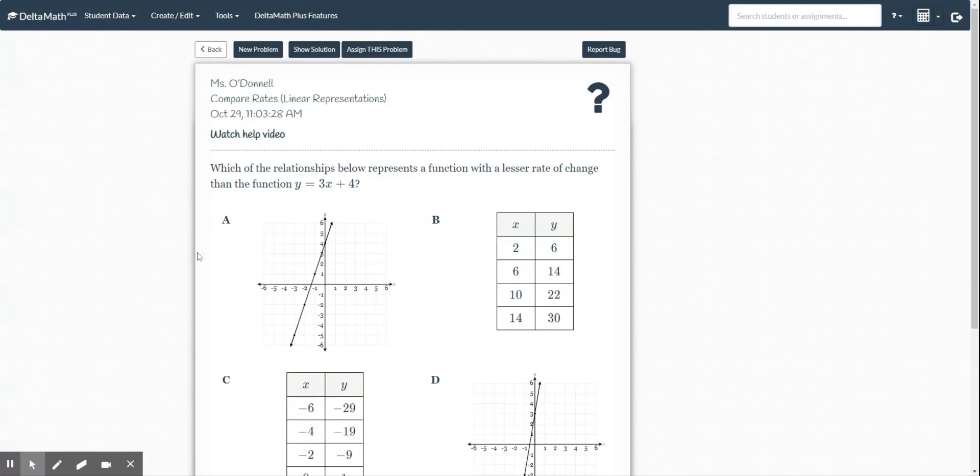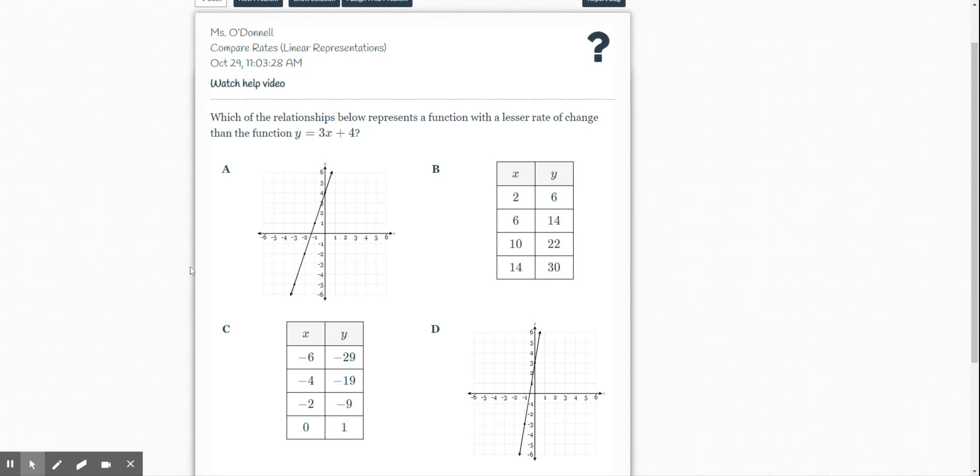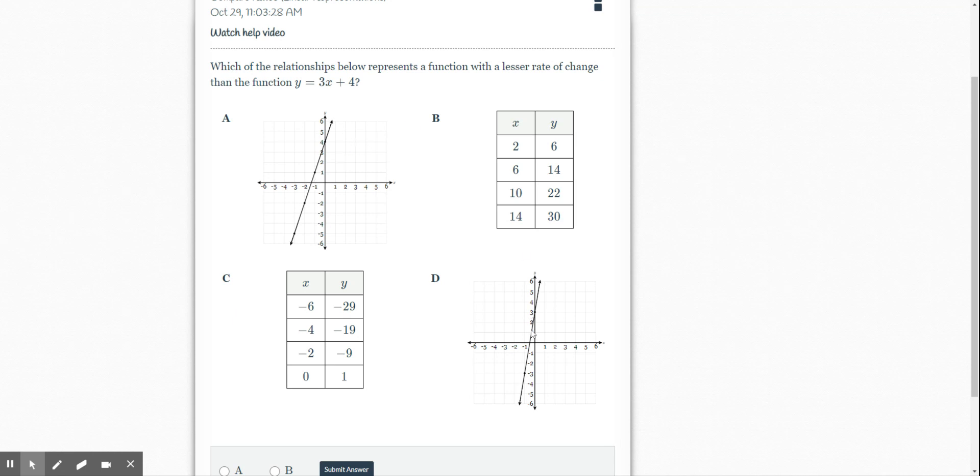So if you are logging on to this, this is a really cool question. You're looking at different representations, and it says which relationship below represents a function with a lesser rate of change than this function, y equals 3x plus 4. What they're asking you to do here is find your slope or your rate of change for each function and then identify which one is less than 3. Because we know in y equals mx plus b, which is slope intercept form, the slope is that 3 or that coefficient on our x. So let's check it out here. Let's look for a slope.